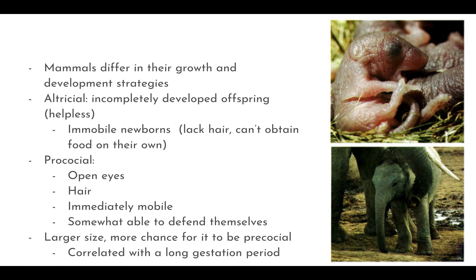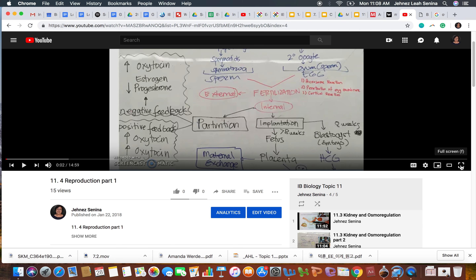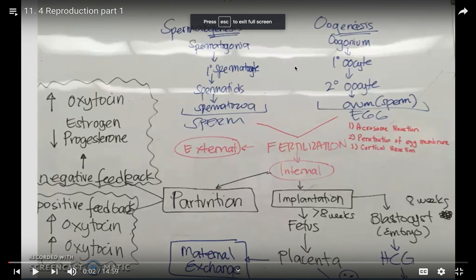Concept map review: we learned how to produce sperm and eggs, the three steps of fertilization — acrosome reaction, penetration, cortical reaction — implantation of the blastocyst producing HCG, then after eight weeks the fetus with its placenta exchanging nutrients and waste. Parturition involves negative feedback (decrease of progesterone) triggering oxytocin release and positive feedback increasing oxytocin until the baby comes out.